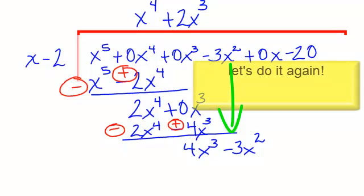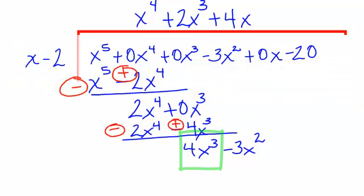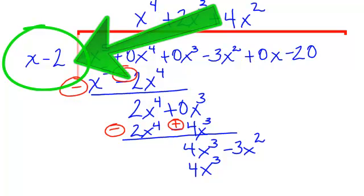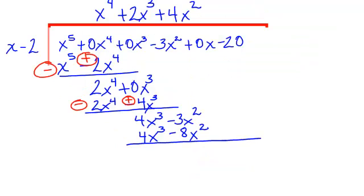Let's do it again. x will go into 4x cubed — that would be a positive 4x squared. 4x squared times x will be 4x to the 3rd, and 4x squared times negative 2 would be negative 8x squared. Draw your line and you're going to subtract, which means basically changing the signs. The 4x cubed terms cancel. Negative 3x squared and positive 8x squared will be 5x squared. Bring down that next term.